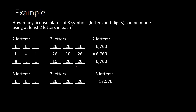Each of these four cases is mutually exclusive — you cannot have letter-letter-number and letter-number-letter at the same time. So we add all the possibilities together: three groups of 6,760 plus 17,576 gives a total of 37,856.